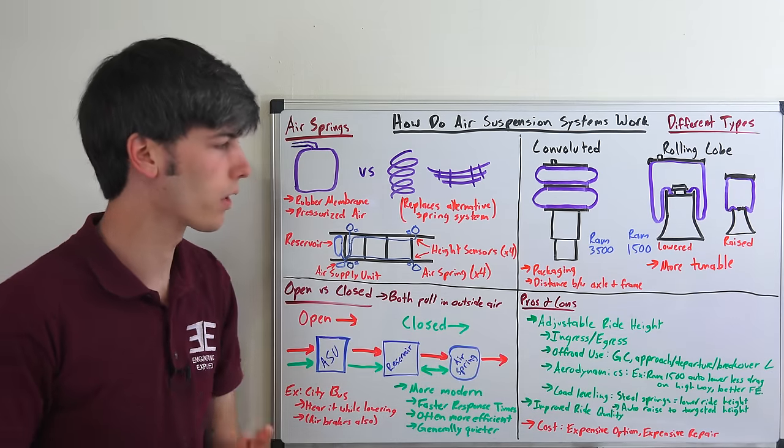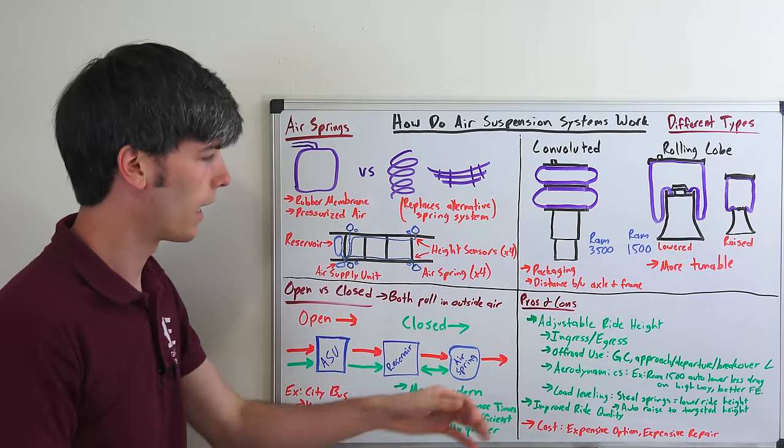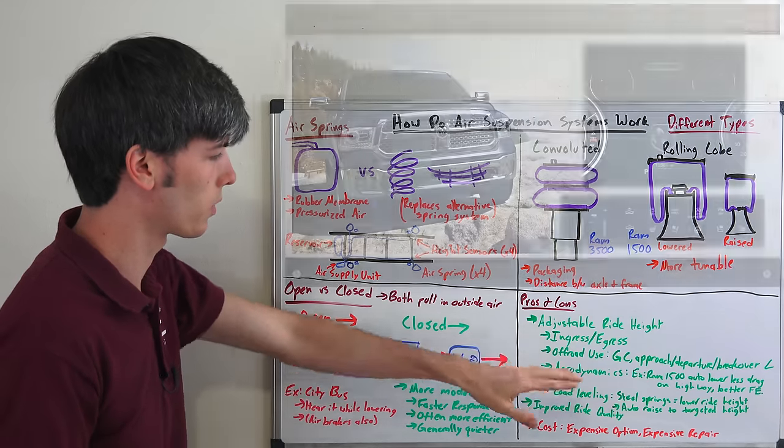Well there are quite a bit of advantages that have to do with it having an adjustable ride height. So ingress and egress, getting in and out of the car, you can lower it down. Which is nice to be able to do especially for tall trucks.